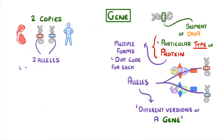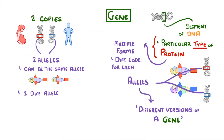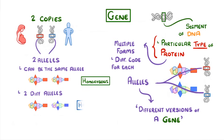These two alleles could both be the same allele, or they could be two different alleles. If they were the same, we'd say they were homozygous for that allele, whereas if they were different, we would be heterozygous.